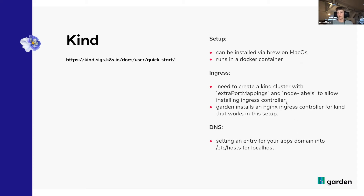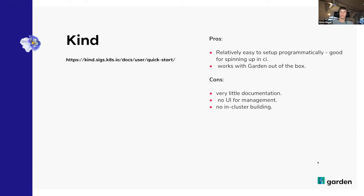With DNS in kind, you don't get any nice add-ons — if you want to call your ingresses by their domain name, you need to create DNS entries in /etc/hosts pointing to localhost. The pros are that it's relatively easy to set up programmatically, so it's quite easy to spin up kind clusters in CI, and it also works with Garden out of the box. Cons: very little documentation on how it actually works, no UI for management, and you can't use in-cluster building — you rely completely on Docker running on your local machine.